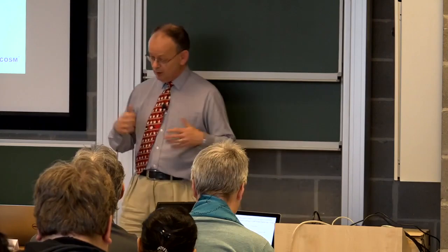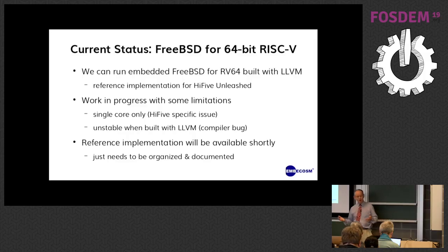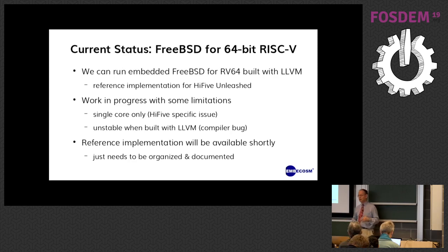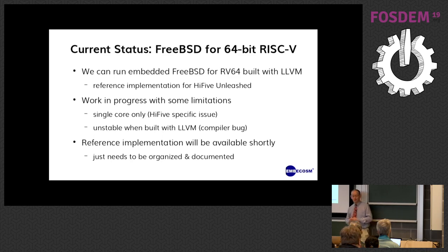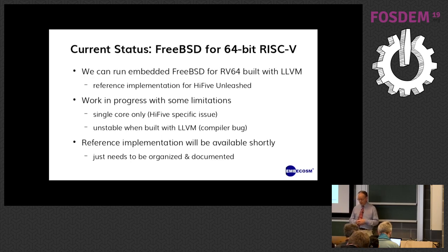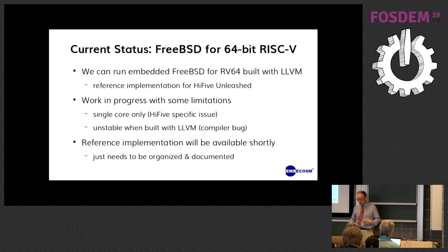So where are we? We can run embedded FreeBSD for RV64 built with LLVM. There's a reference implementation for the HiFive Unleashed, but it only works on a single core and we're still trying to nail that down. It's unstable with LLVM and we should knock out that compiler bug in the next week or two. The reference implementation will appear on GitHub in the next day or two — if you need it, please shout at me.